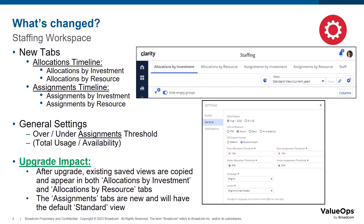Existing saved views from 16.1.2 allocations timeline were shared between allocations by investment and allocations by resource. After upgrade, these views are copied to both allocation tabs. It will be up to users to determine which existing views are relevant to keep or remove for the different tabs. The assignment tabs are new in this release and will have only the default standard view, so users will need to set up saved views as per their needs.